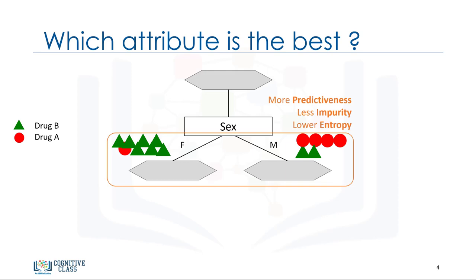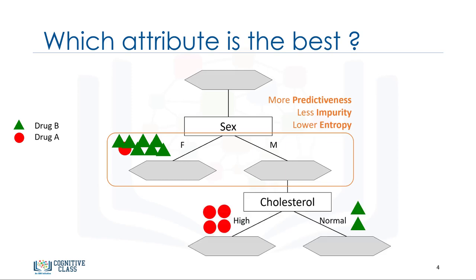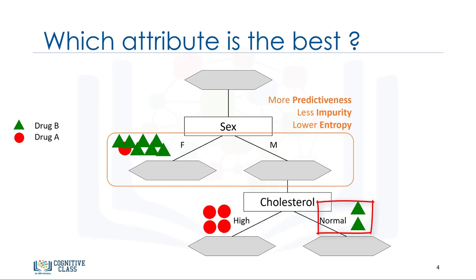Let's go one step further. For the male patient branch, we again test other attributes to split the subtree. We test cholesterol again here. As you can see, it results in even more pure leaves, so we can easily make a decision. For example, if a patient is male and his cholesterol is high, we can certainly prescribe drug A. But if it is normal, we can prescribe drug B with high confidence.